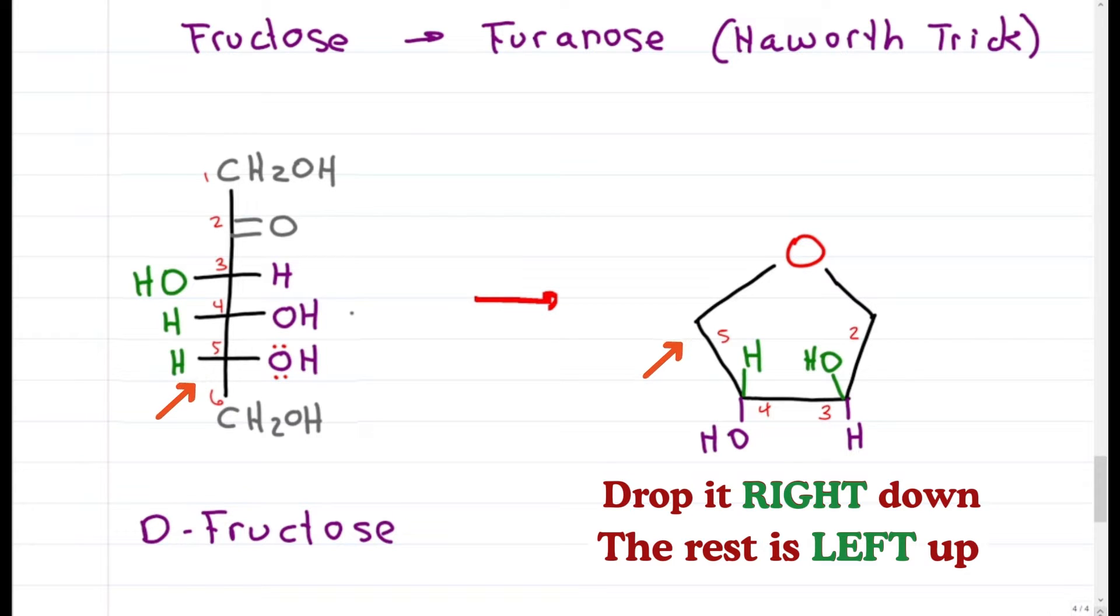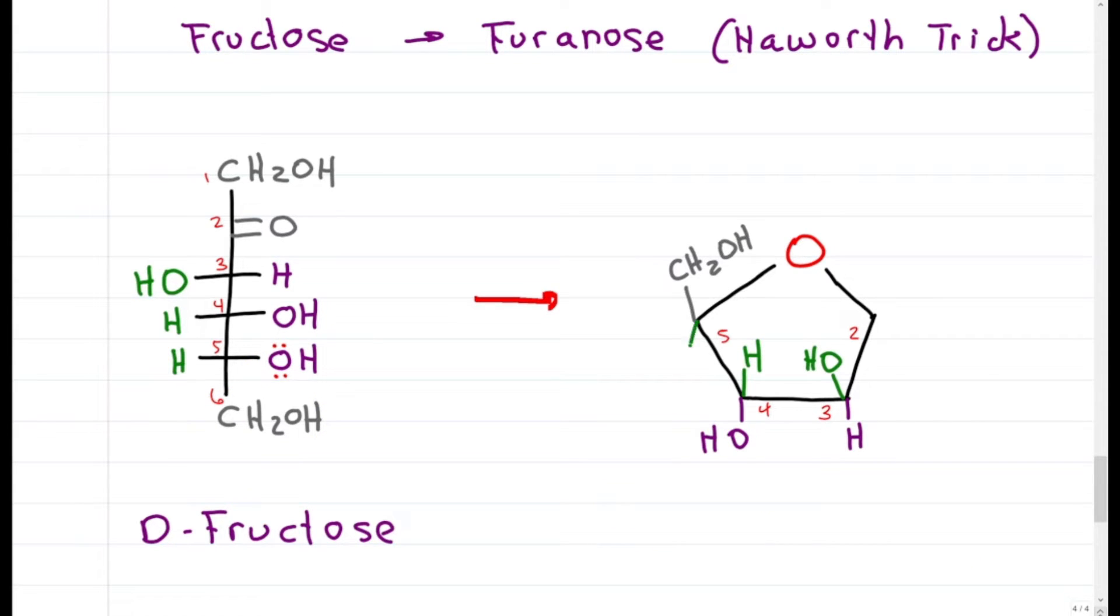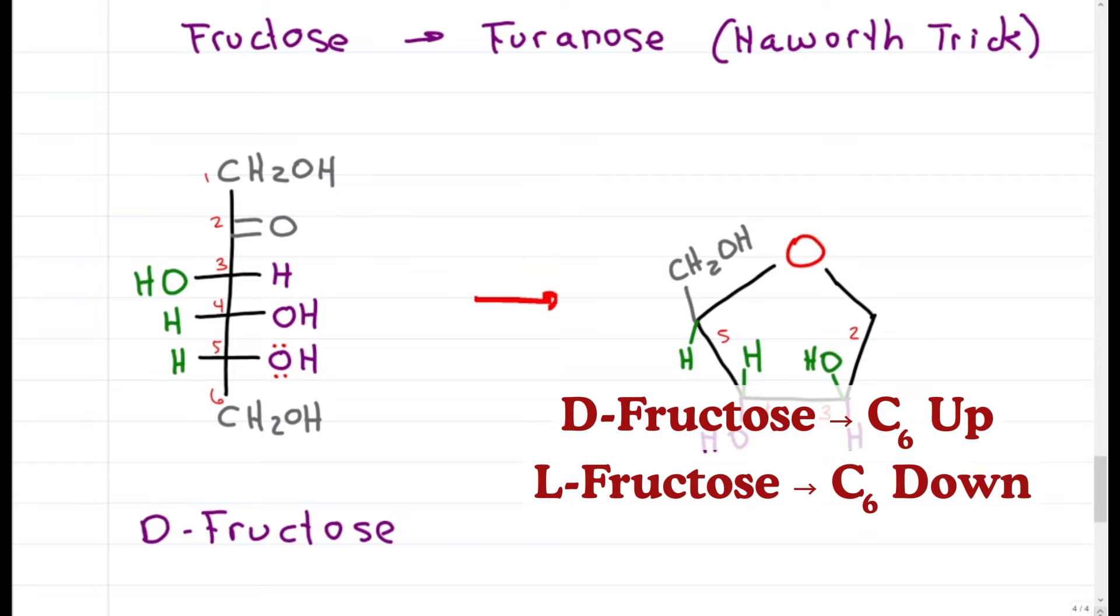Since the attacking OH is right down, carbon 6 will be left up. Hydrogen just goes to the other side. As a reminder, D-fructose, carbon 6 is up. L-fructose, carbon 6 is down.